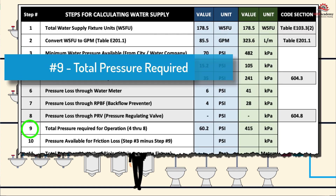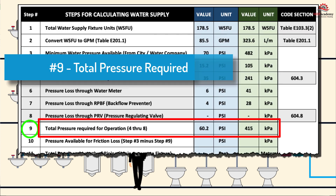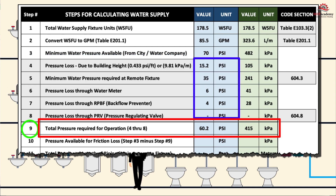Step 9: Total Pressure Required for Operation. Add up all pressure losses and the required minimum water pressure at the remote fixture with the highest requirements. Adding steps 4 through 8 in our example equals 60.2 PSI or 415 kPa. This is the total pressure required for proper operation, not including the pressure drop caused by water flowing through pipe and fittings.